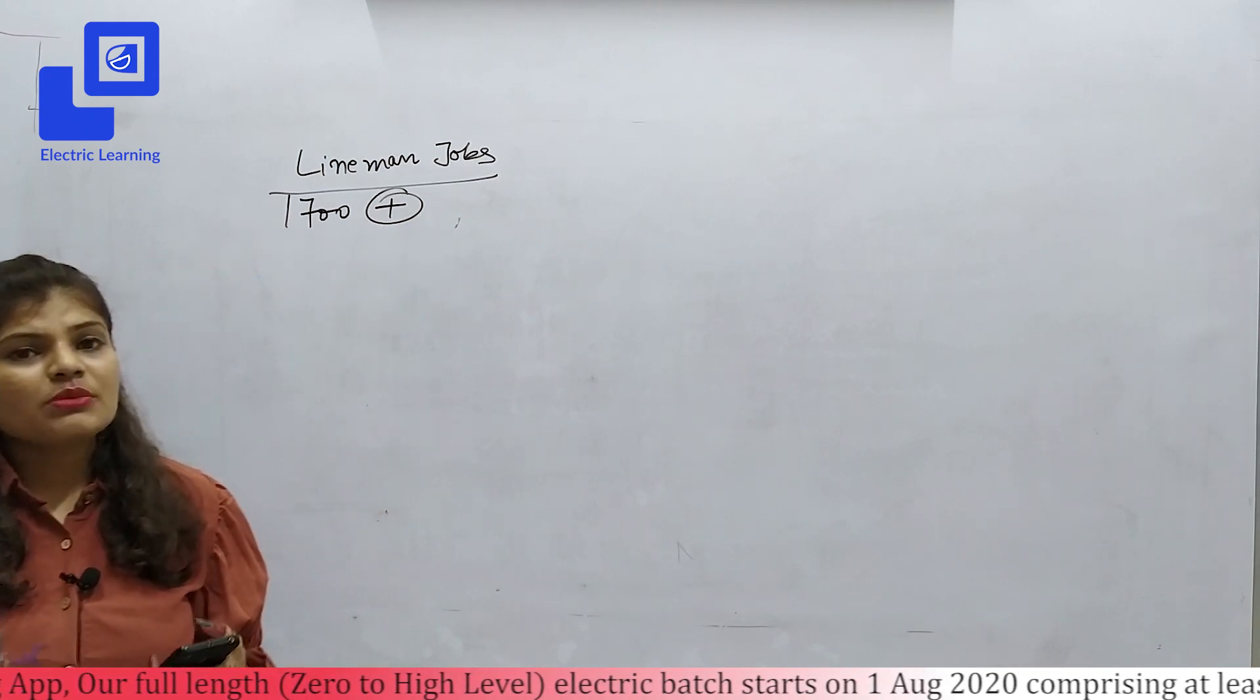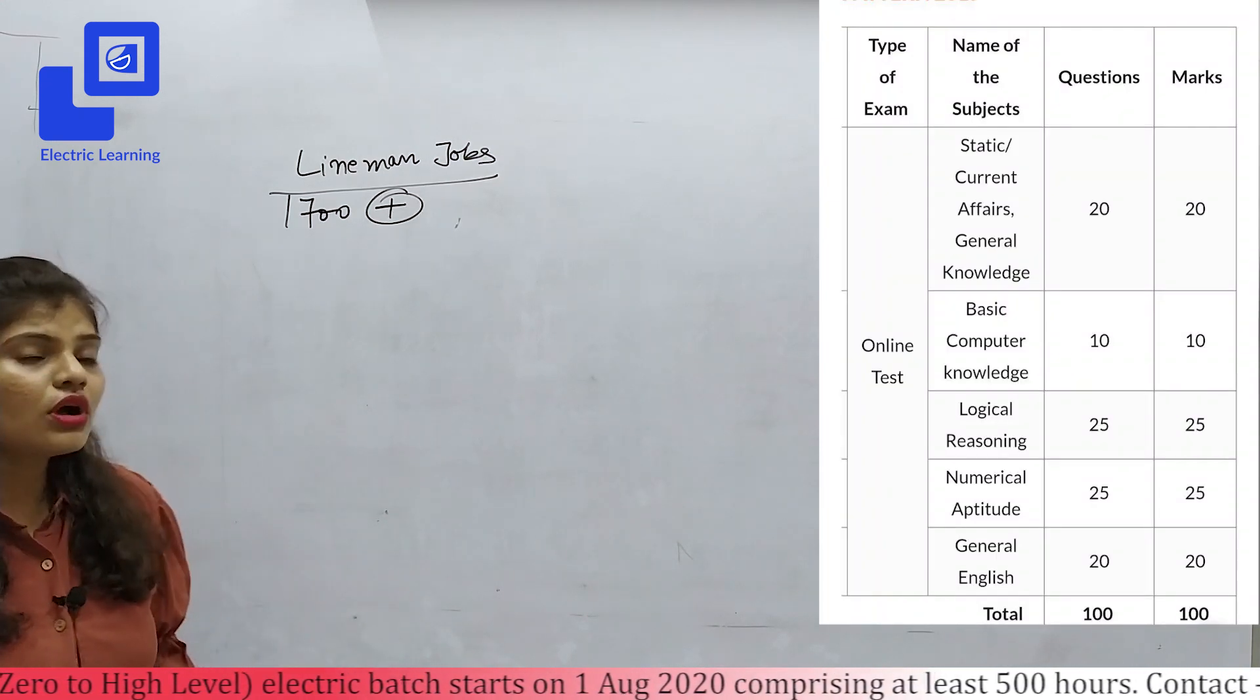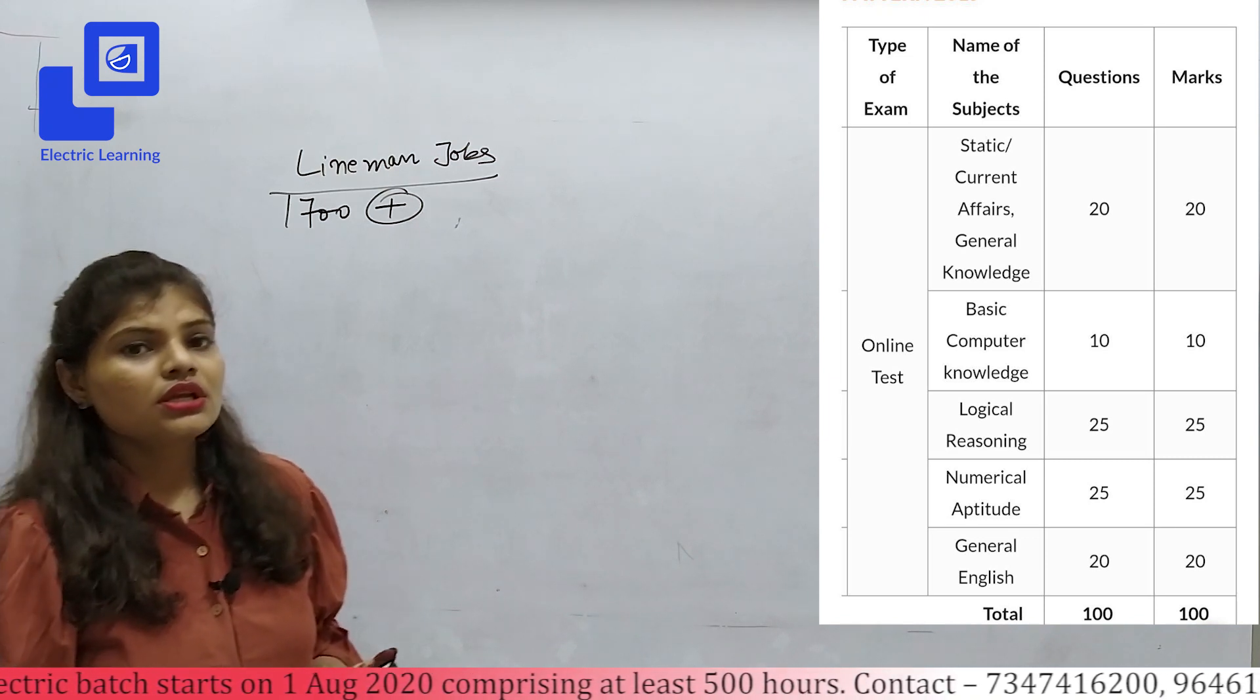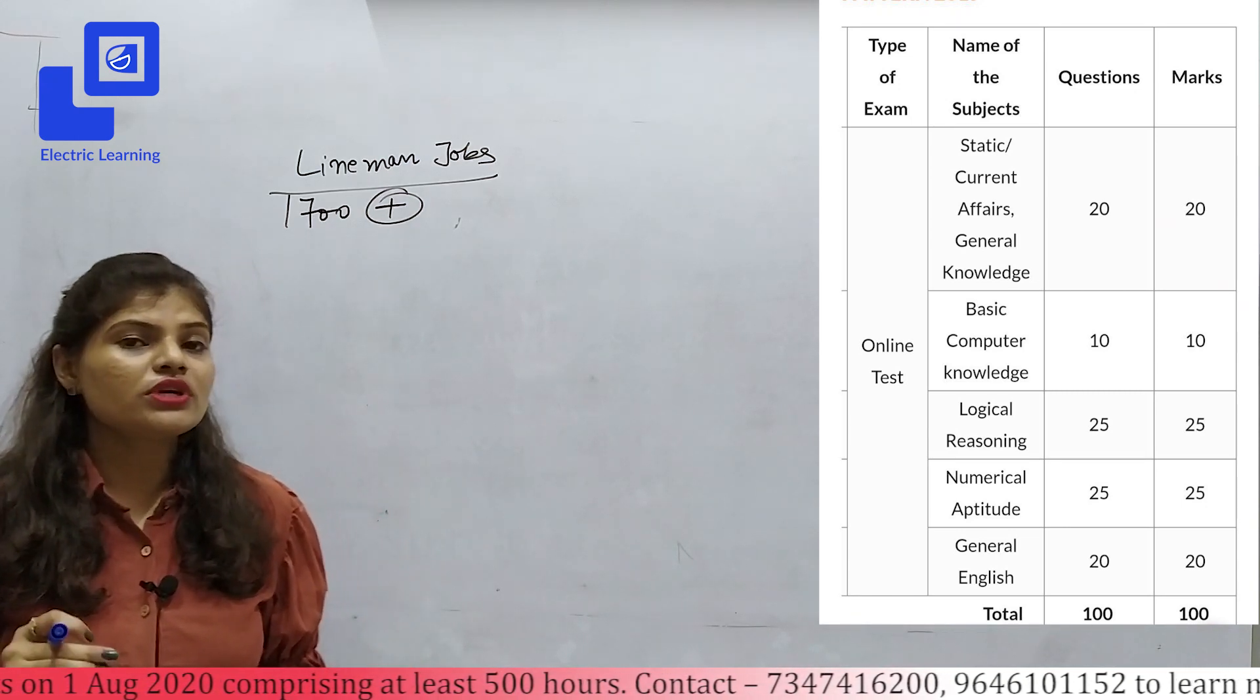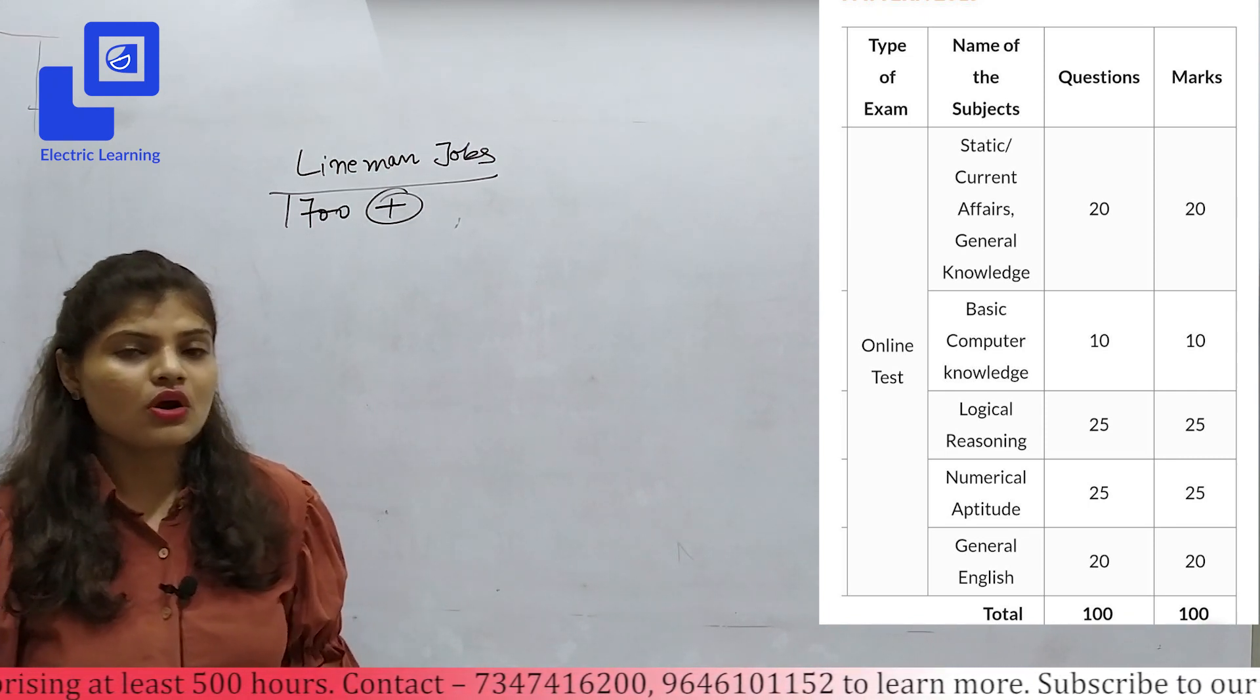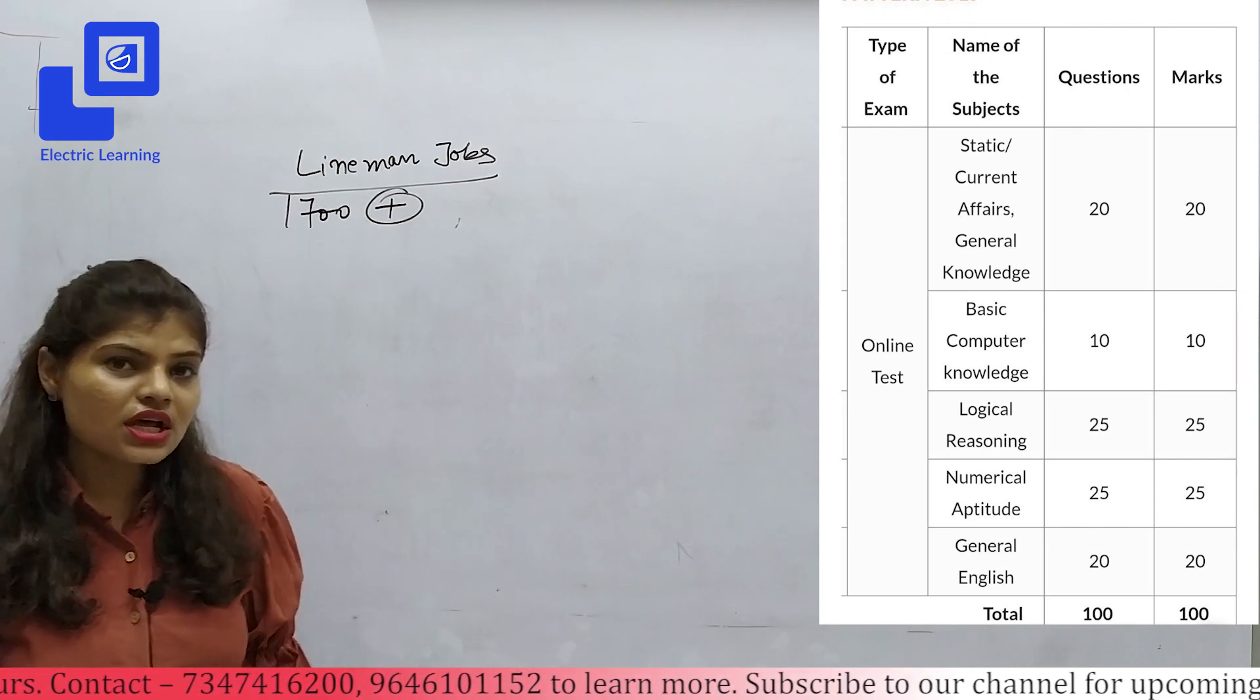So the linemen's syllabus is almost the same as LDC if we talk about the written exam, which is a total of 2 hours. We will ask mathematics, reasoning, English, GS, computer. Mathematics and reasoning will be 25 marks each, meaning that both are 50 marks. GS and English 20 marks each, and computer 10 marks. No sectional timing.